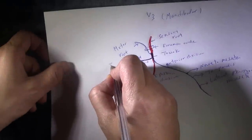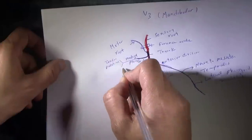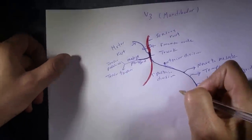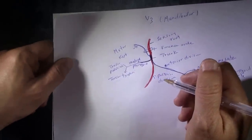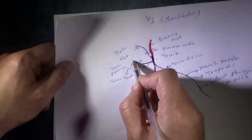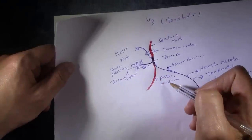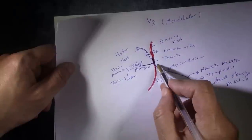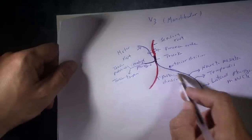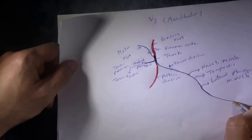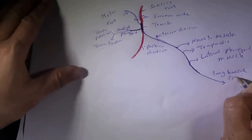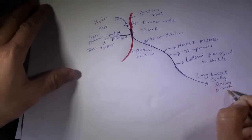In addition to medial pterygoid, the trunk also sends small branches to two other muscles: the tensor palatini muscle (for the palate) and the tensor tympani muscle (in the tympanic cavity). So the trunk supplies medial pterygoid, tensor palatini, and tensor tympani. The only sensory component of the anterior division is the long buccal nerve — the only sensory branch of the anterior division.